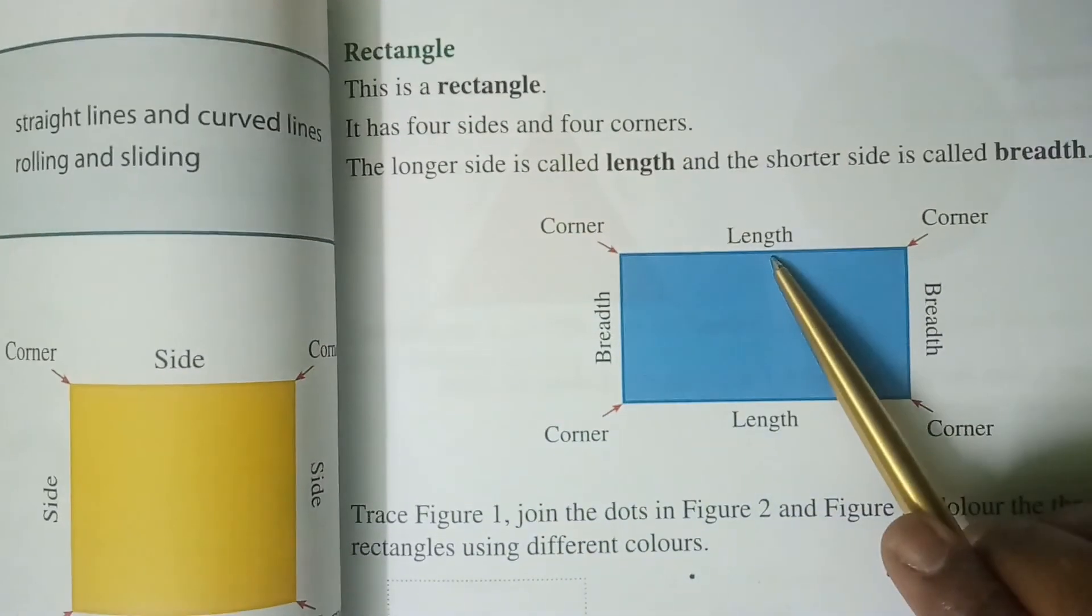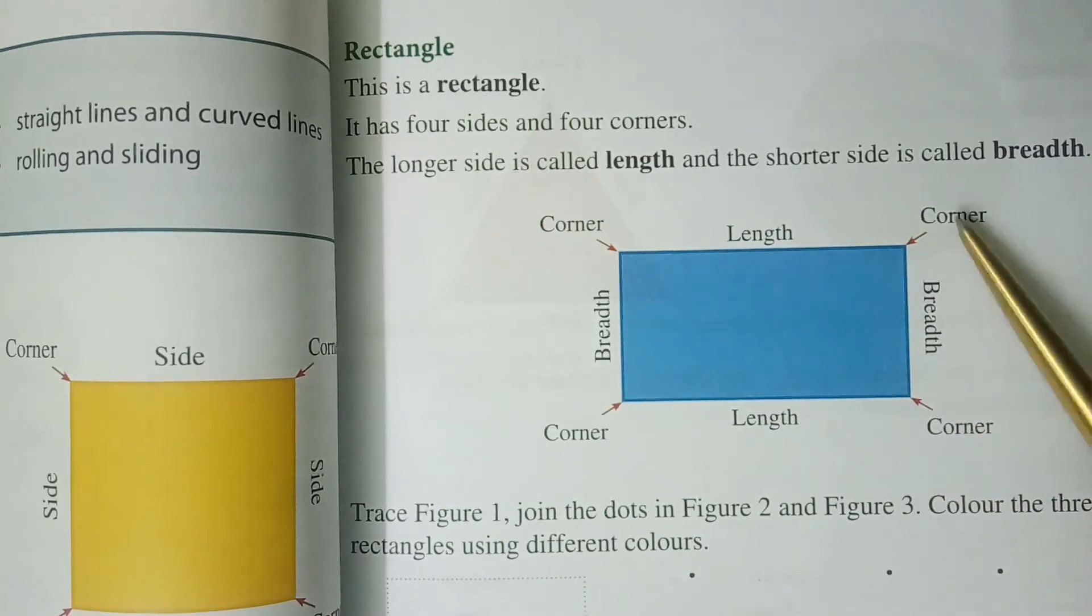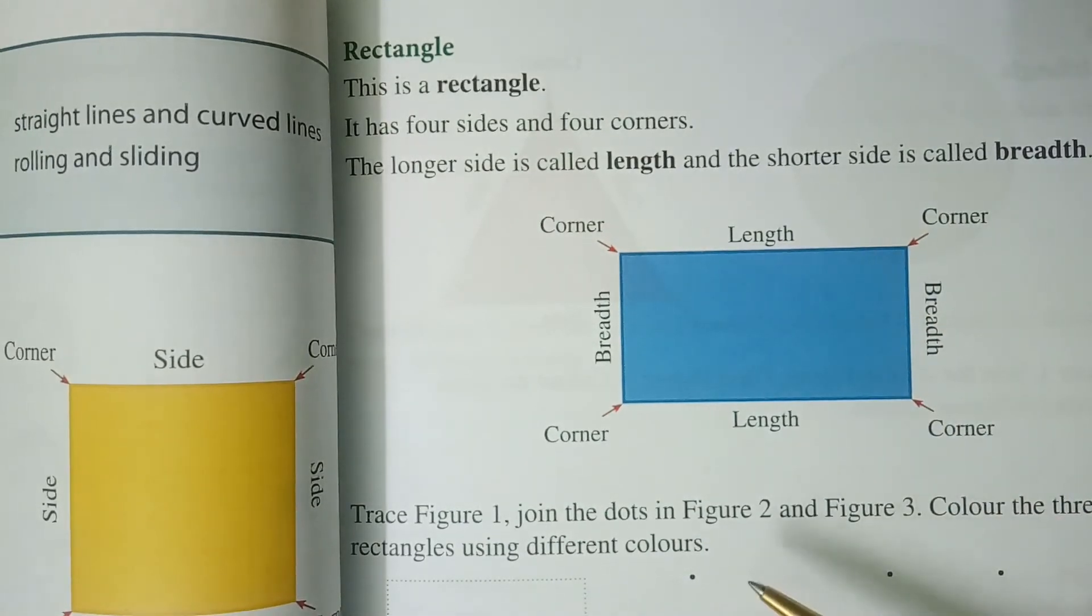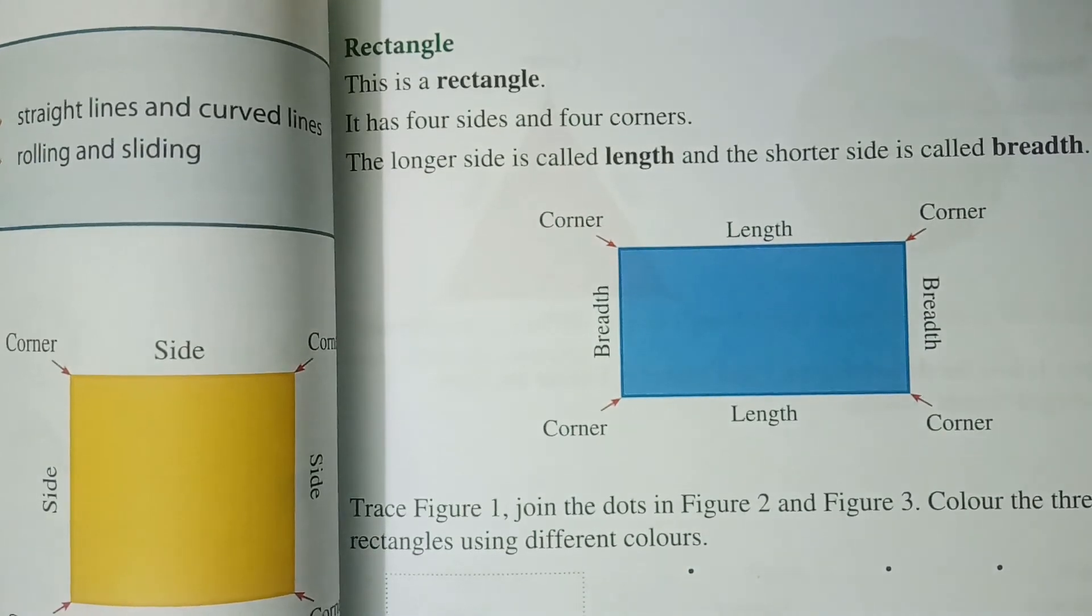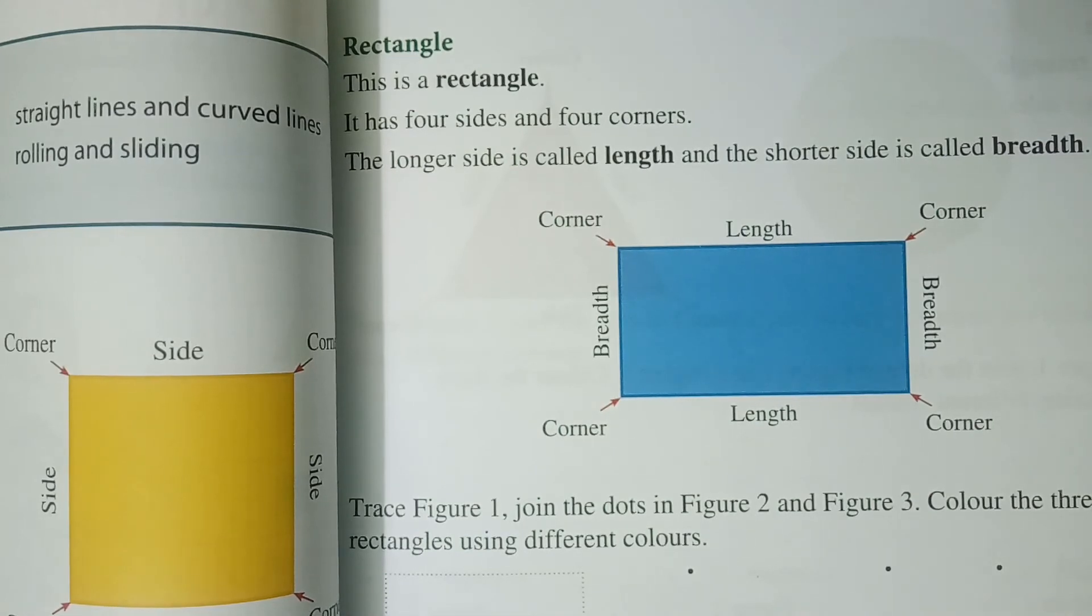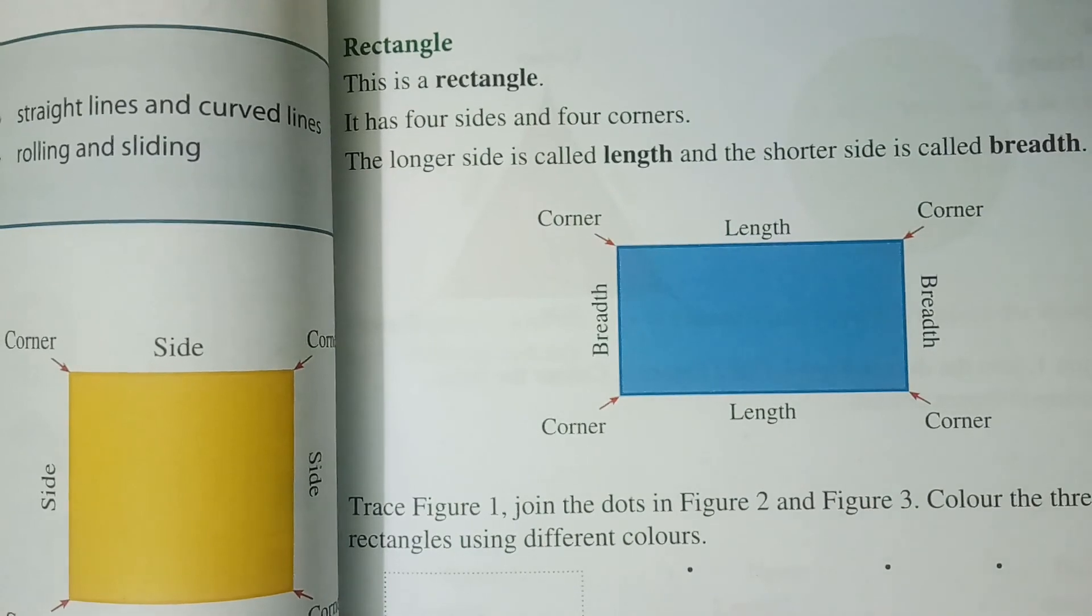It has a long length and a shorter side, children. So such type of objects we call it as rectangle. In the next video class we will learn about one more shape, children. Thank you.